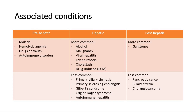The less common hepatic causes are primary biliary cirrhosis, primary sclerosing cholangitis, Gilbert's syndrome, Crigler-Najjar syndrome, and autoimmune hepatitis. For post-hepatic causes, there are mainly conditions causing obstruction after the liver, such as gallstones, pancreatic cancer, biliary atresia, and cholangiosarcoma, which is cancer of the bile ducts.